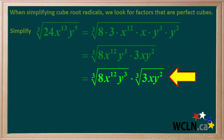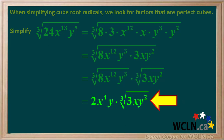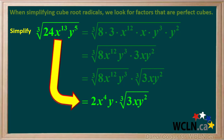Now we have this expression. Taking the cube roots of the perfect cubes gives us 2x to the 4th y. The cube root of 3xy squared cannot be simplified, so we just write it down here the way it is. So we can state that the cube root of 24x to the 13th y to the 5th can be simplified to 2x to the 4th y times the cube root of 3xy squared.